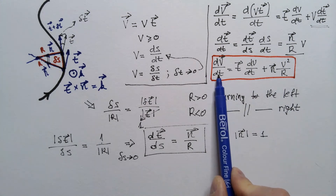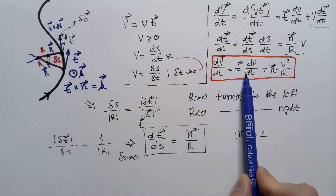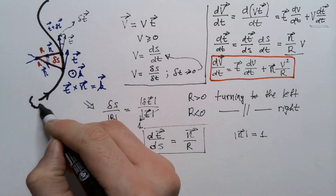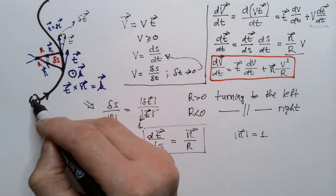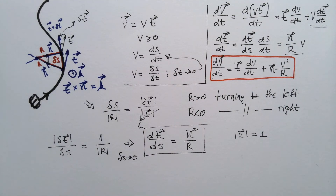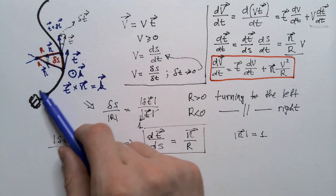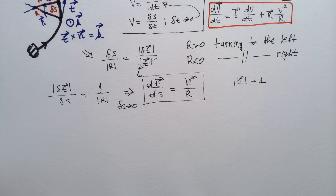This acceleration expression has two terms. The first term, t·(dv/dt), represents the rate of change of speed of the air parcel along its motion. The second term, n·(v²/r), is the centripetal acceleration due to the curvature of the trajectory. Now let's look at how the different forces appear in the natural coordinate system.